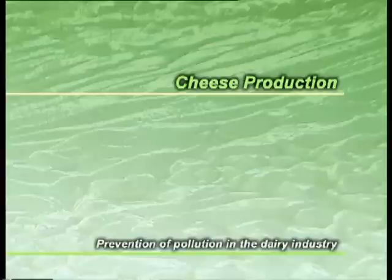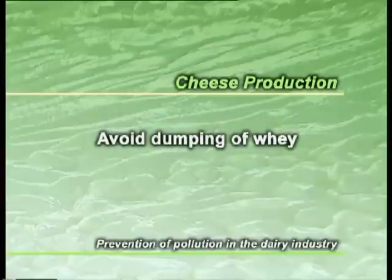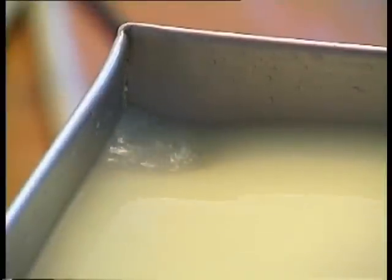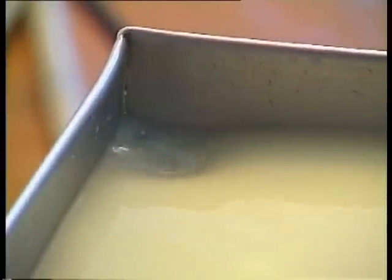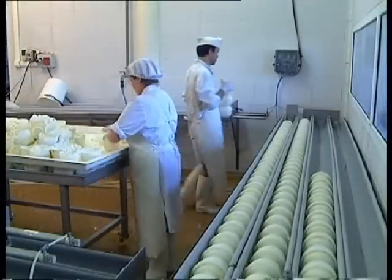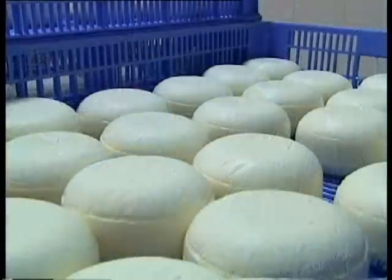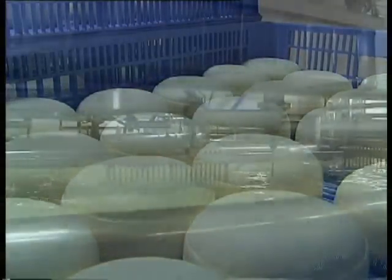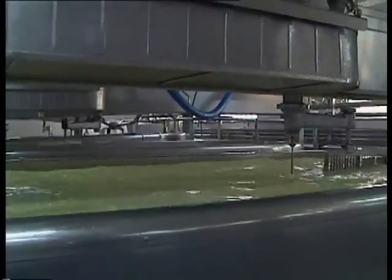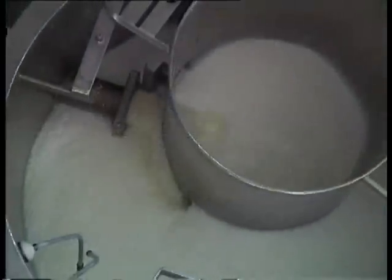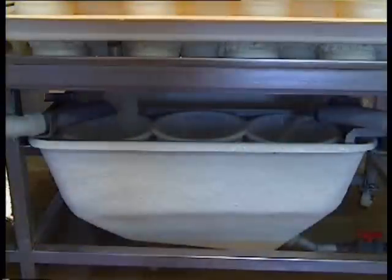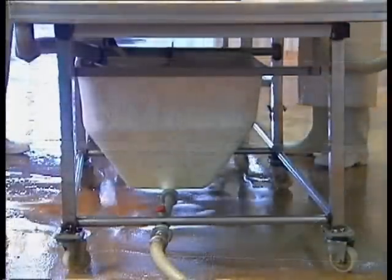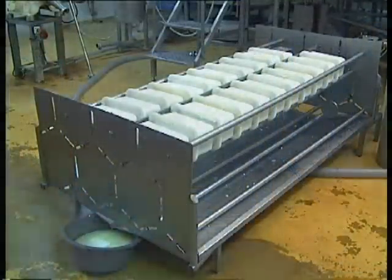Cheese production. Avoid dumping of whey. One of the main environmental challenges of cheese industries is whey, the liquid phase obtained by cutting the cheese curds. Some 9 litres of whey are generated for every kilo of cheese produced, with a COD of approximately 60,000 milligrams per litre. An adequate design of the production lines allows us to prevent the dumping of whey in the sewers, for example, by placing collection trays where dripping of whey can occur.